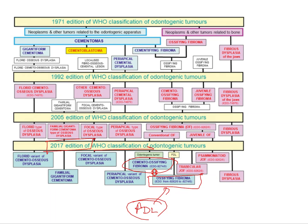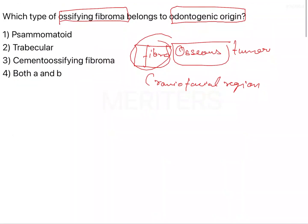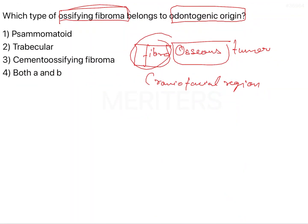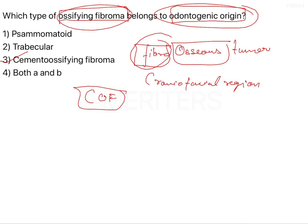So yes, cemento-ossifying fibroma, also known as the ossifying fibroma according to the newer classifications, is odontogenic in nature. The ossifying fibroma that belongs to odontogenic origin is cemento-ossifying fibroma, also written as DCOF in general, and you can find it in short form in your exam as well.